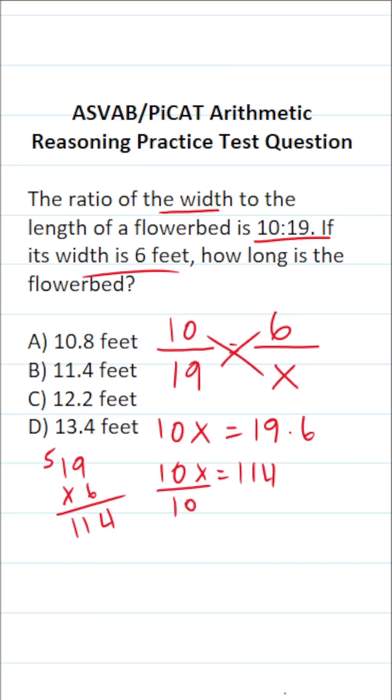To get X by itself, we're going to divide both sides of this equation by 10. This says X equals 114 divided by 10.